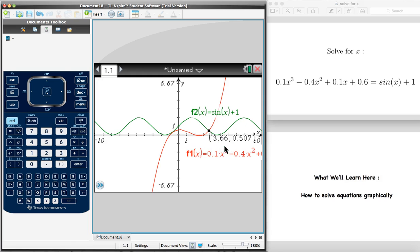And we can see here it's added this point, the coordinates. And it's adding 3.66, 0.507. So those are the coordinates of the point of intersection of those two curves. Now, since we were asked to solve for x, the only value that we're interested in here is the 3.66. So we can already say that this equation definitely has one solution, which is 3.66.